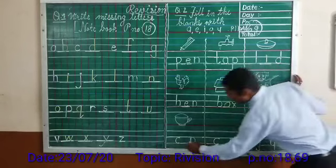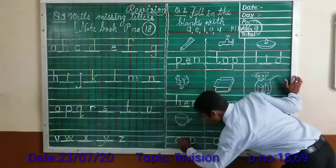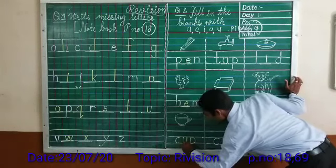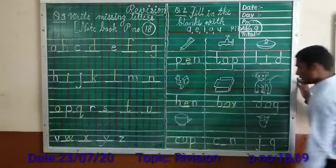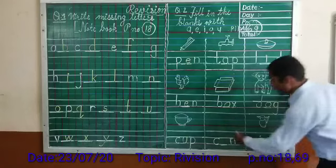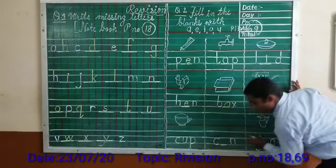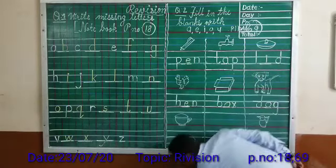Second line is completed. Now the last one. What is missing here? U is missing here. There is a third picture here — one picture is missing here.